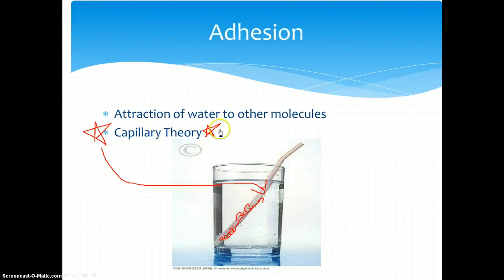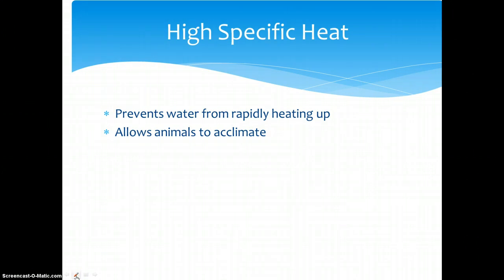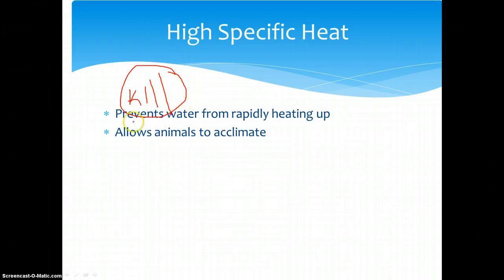Moving on to the next property of water: high specific heat. High specific heat prevents the water from rapidly heating up. This is extremely important because without it, aquatic animals would not be able to survive — the sudden change in temperature would immediately kill hundreds of fish. This property allows animals to steadily adjust to the temperature, and this process is called acclimation, which is a very key term.